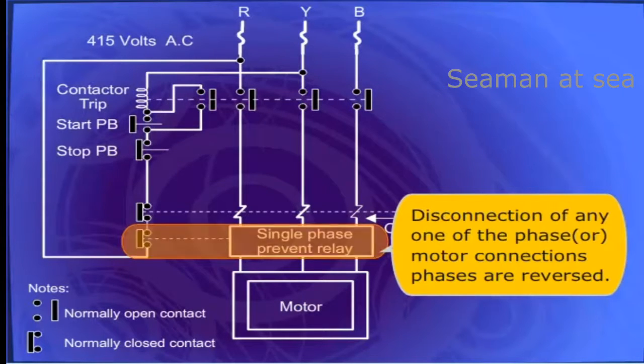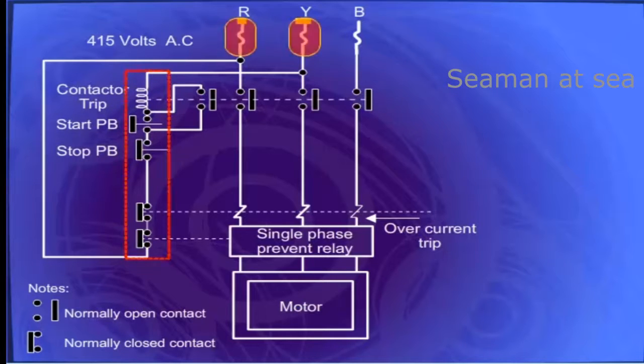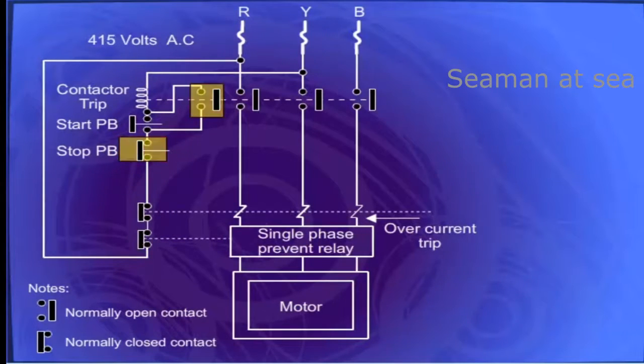The preventer also trips when the motor connection phases are reversed. The main electrical equipment is connected to the supply through the contacts of the contactor. The control unit is connected across two phases of input supply.